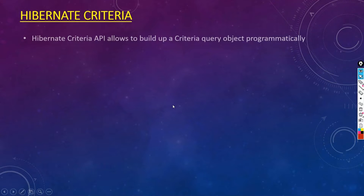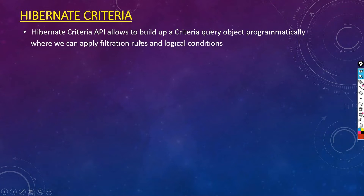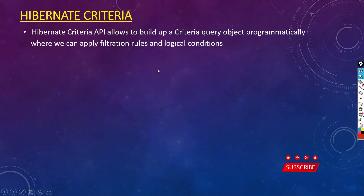The Hibernate Criteria API allows you to build up a criteria query object programmatically, where we can apply filtration rules and logical conditions. We can apply filtration rules like a WHERE condition, and we can even use logical conditions like AND and OR operators.